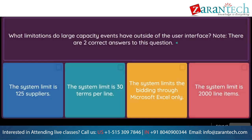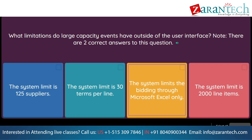Question: What limitations do large capacity events have outside of the user interface? Note, there are two correct answers to this question. Option 1: the system limit is 125 suppliers. Option 2: the system limit is 30 terms per line. Option 3: the system limits the bidding through Microsoft Excel only. Option 4: the system limit is 2000 line items.